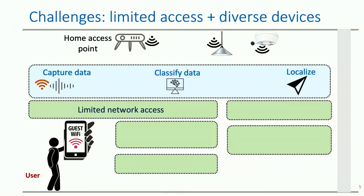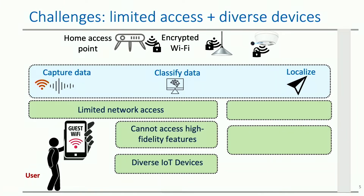Capturing data is difficult because of the limited network access to the user. A user does not know how many devices are out there, what access points they are connected to, or what wireless channels they are using to communicate. Moreover, these devices could be operating on the main home network, whereas a user is only given access to a guest Wi-Fi network. Classifying data is difficult because all the Wi-Fi traffic is encrypted. That means we don't have access to features such as IP, DNS, NTP, et cetera, which are widely used for device fingerprinting but are only available at the router.